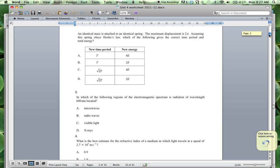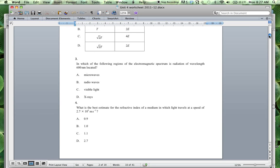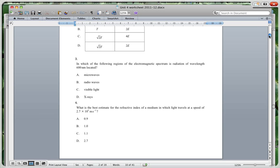Going on to question 3 and 4. It says over here, in which of the following regions of the electromagnetic spectrum is radiation of wavelength 600 nanometers located? So you've got to know this. You've got to have an idea of your electromagnetic spectrum. What are the wavelengths of, and it would be visible light. So that's something basically you've got to know.